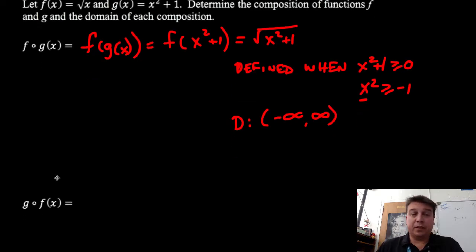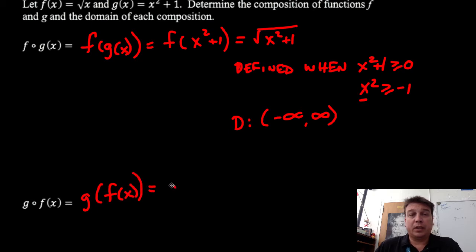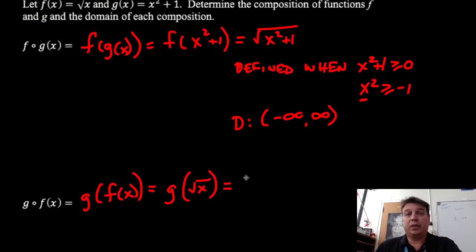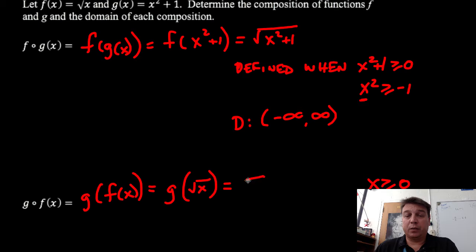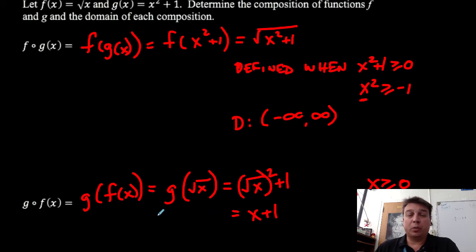The next example is a little bit different — we reverse the order. I'm taking g of f of x, which is g of the square root of x. Now I take function g and substitute in. I have x squared plus 1, but before I get there, I have to remember that because of the square root of x, x has to be greater than or equal to 0. Substituting in, the square root of x gets squared, and then I add 1, giving me x plus 1. But we do have a restriction with the domain.